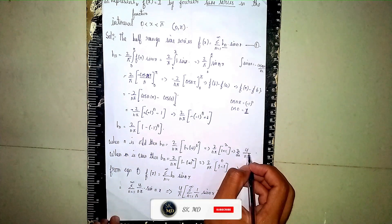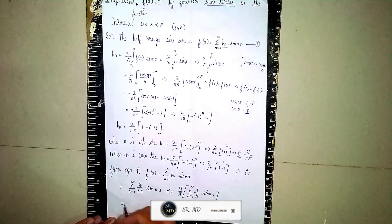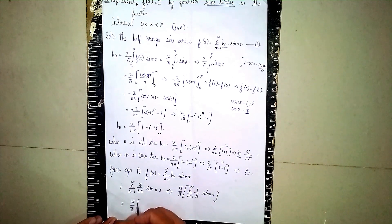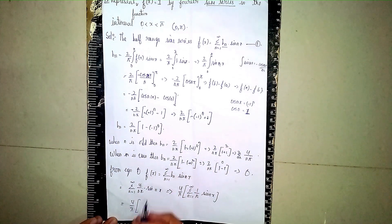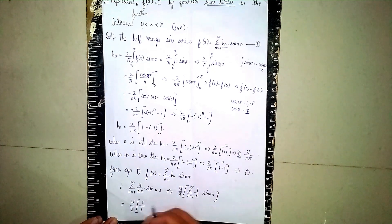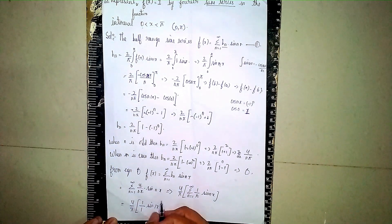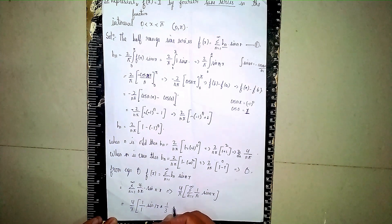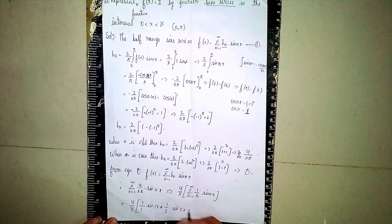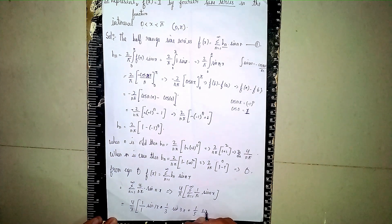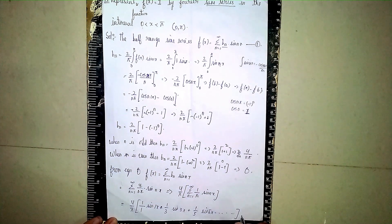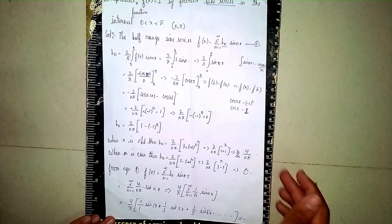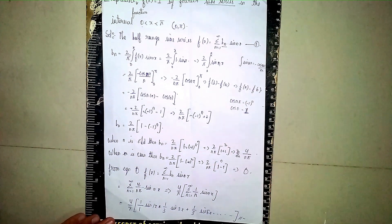Substituting the odd values n = 1, 3, 5, ... up to infinity, we get: f(x) = (4/π)[(1/1)sin(x) + (1/3)sin(3x) + (1/5)sin(5x) + ...]. This is our final answer. These are the steps involved to solve this question. Thanks for watching.